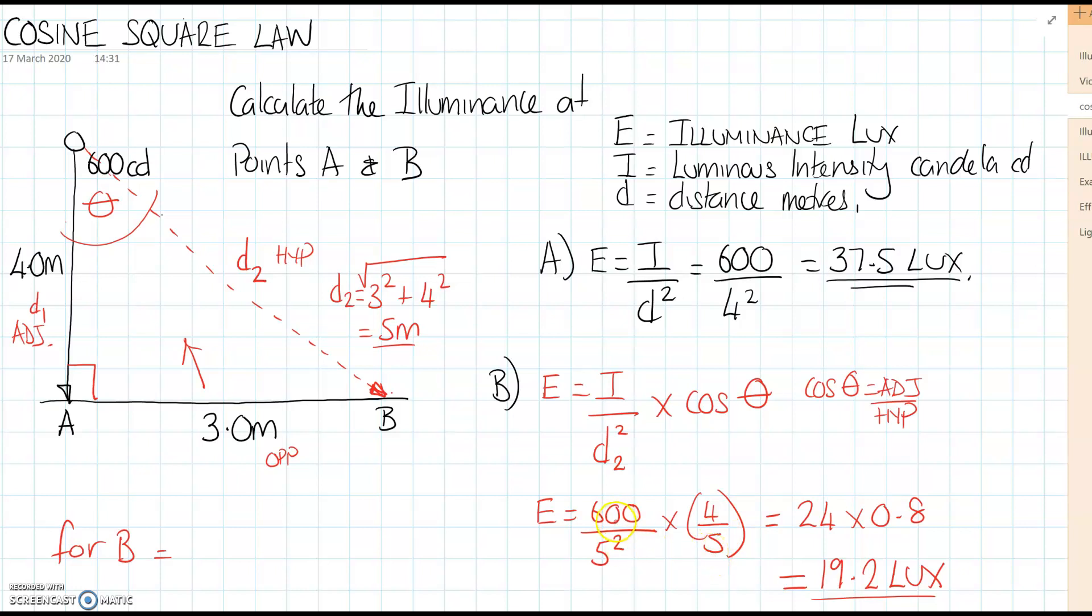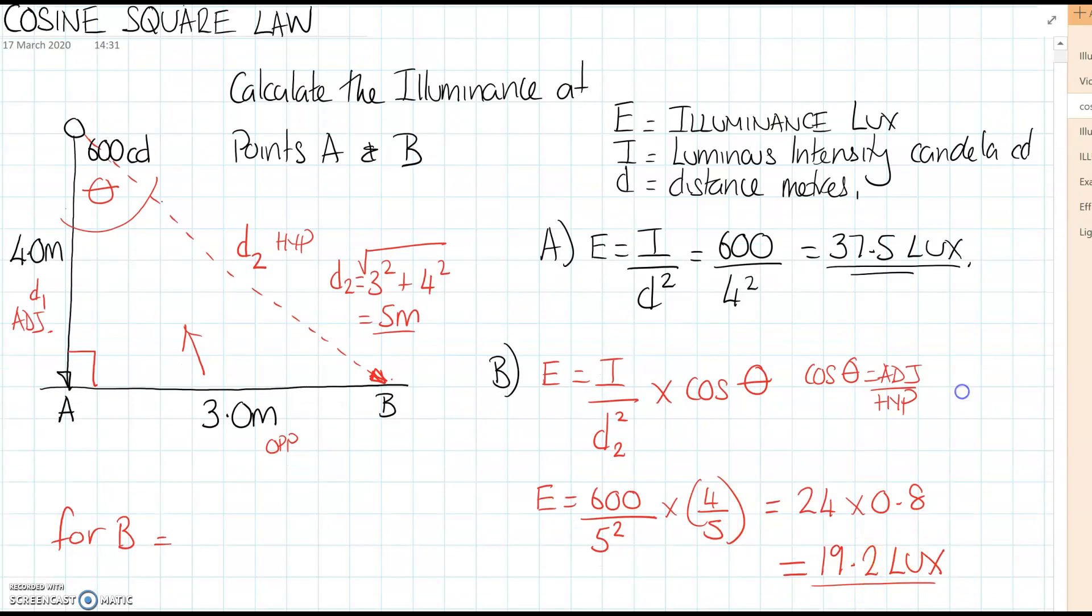Which is 4 over 5. So 600 divided by 25 is 24, times 0.8, which is 4 over 5, comes to 19.2 lux. So that shows you the further angle away, the lower the lux will be. So we've got that's for point A and that's for point B. And that's how you work out the cosine square law. Hope you've found this useful.